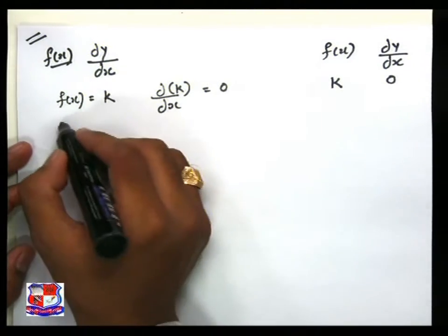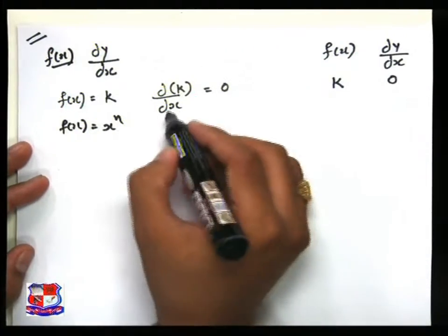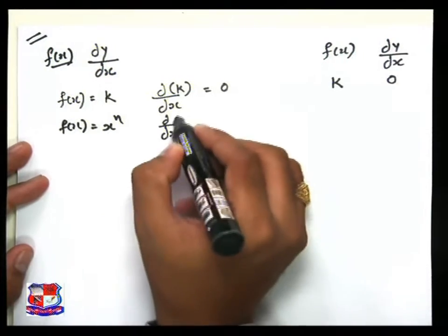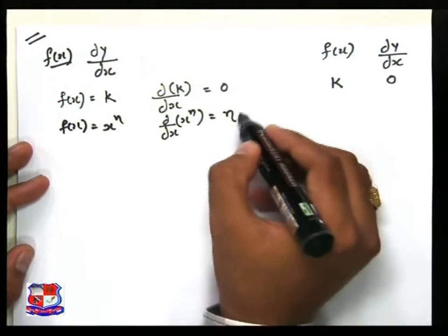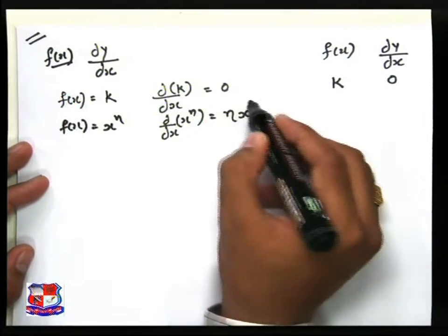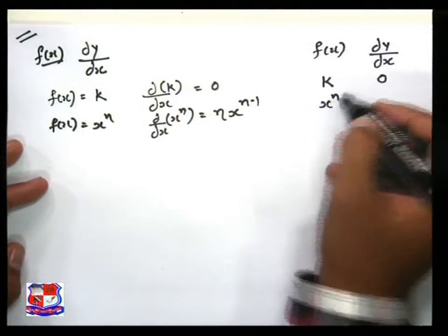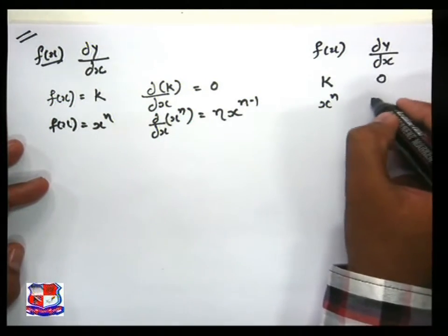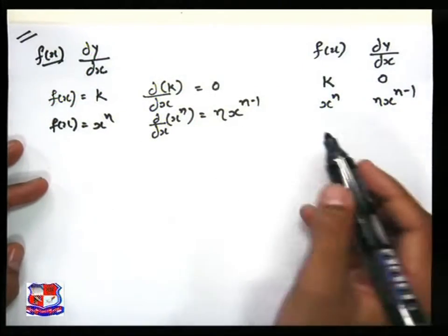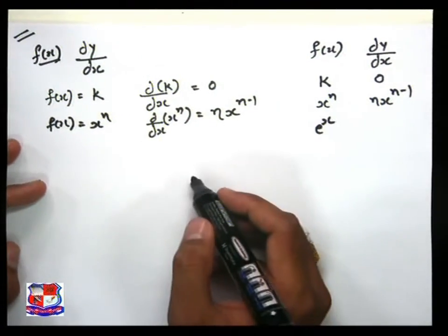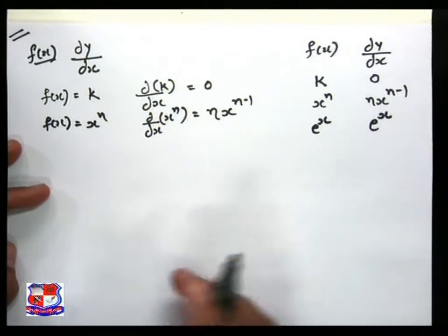Same way, when f of x is equal to x raise to n, we can say the differentiation of x raise to n equals n times x raise to power n minus 1. So another rule: when the input is x raise to n, the differentiation is n x raise to n minus 1. Same way, suppose e raise to x — the differentiation of e raise to x is e raise to x itself.